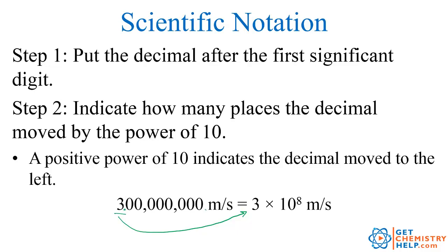How many times would I have to move the decimal from the understood position here to get it over to here? I'd have to go 1, 2, 3, 4, 5, 6, 7, 8 times. So I write that as 3 times 10 to the 8. Because if I took 3 and multiplied it by 10 eight times, I would get 300 million.